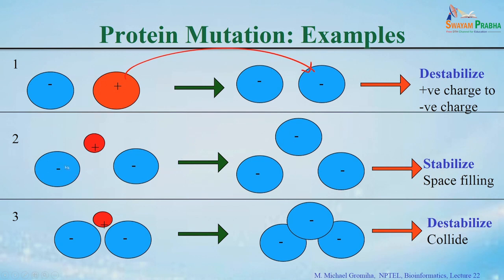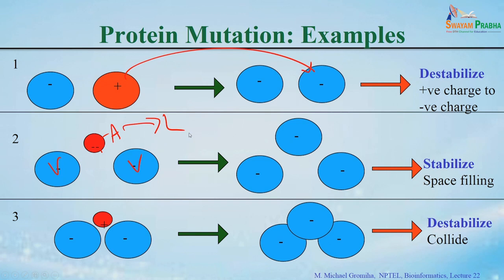The second example: if there are two big residues and one small residue — for example, two valines and an alanine — if you mutate this alanine to leucine, what happens? Leucine is bigger. If there is a lot of space, it occupies all the space — this is a cavity-filling mutation and the protein becomes more compact, which will stabilize it.